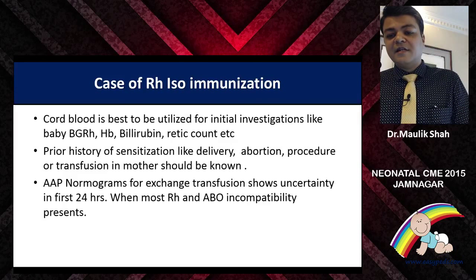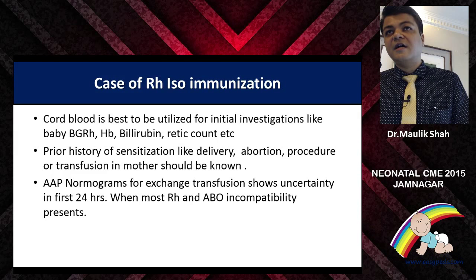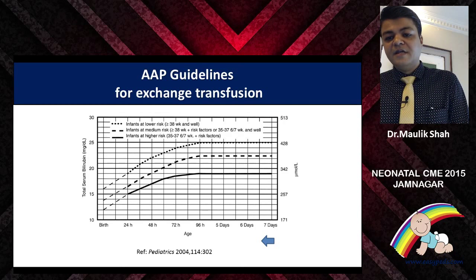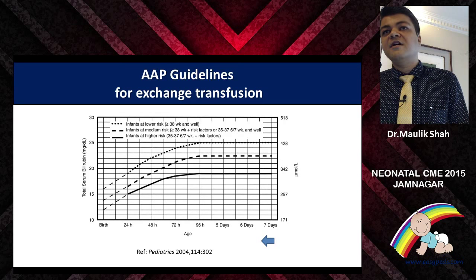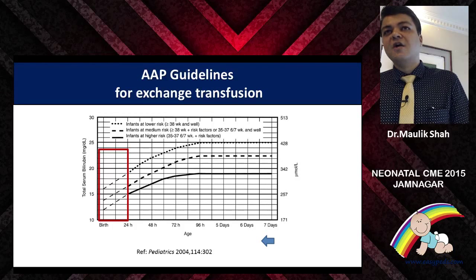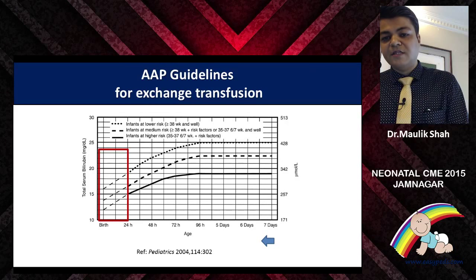Prior history of sensitization — delivery, abortion, procedure, or transfusion to the mother — should be known. AAP nomograms for exchange transfusion are available, but there is uncertainty in these nomograms in the first 24 hours. Looking at the AAP nomogram, the bold lines come only after 48 hours. The first 24 to 48 hours have a little bit of lacunae — the nomogram shows dashed lines for that period.